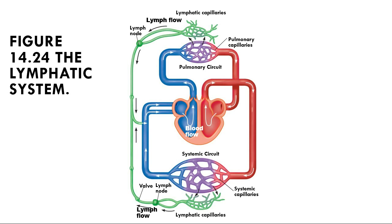The fluid in the lymphatic vessels is called lymph. The lymph is picked up by lymphatic capillaries and travels through different nodes in the body. These nodes are where an immune check happens — there are many immune cells stationed there. They attack anything that's a pathogen, or perceived to be a pathogen, including bacteria, viruses, and cancer cells. That's why when you start feeling sick, your lymph nodes swell up — those cells are mounting an immune response.